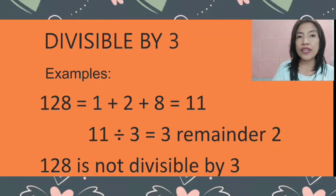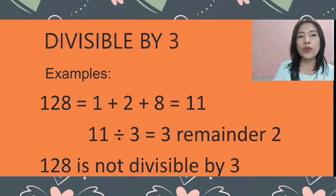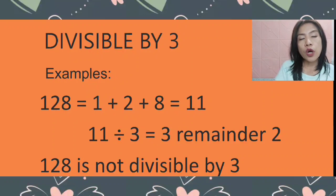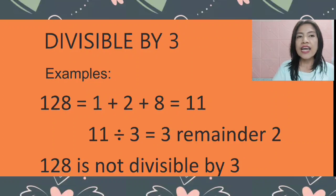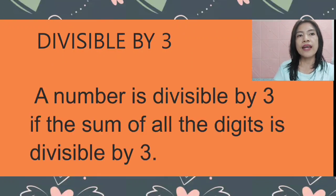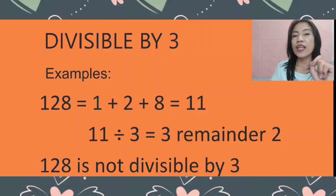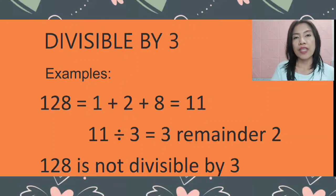Here's the example. We have 128 again. We're going to compute 1 plus 2 plus 8. When we add 1 plus 2 plus 8, it gives us 11. If we divide 11 by 3, it equals 3 remainder 2. Therefore, 128 is not divisible by 3, because the sum is not divisible by 3 — the sum is 11, which gives 3 remainder 2.